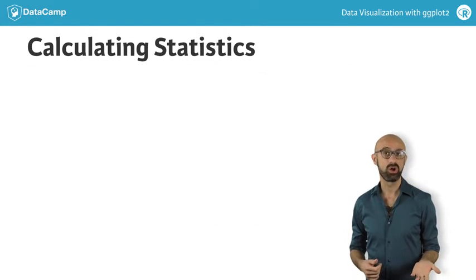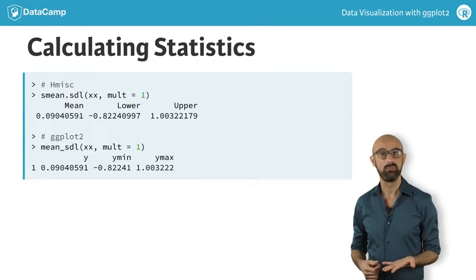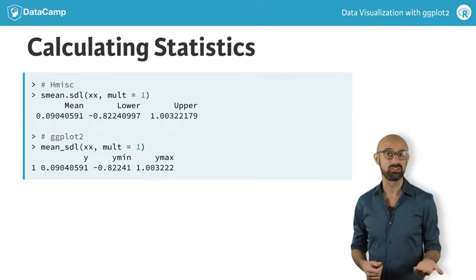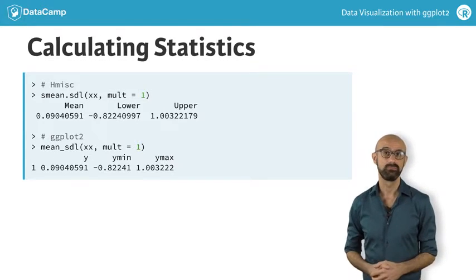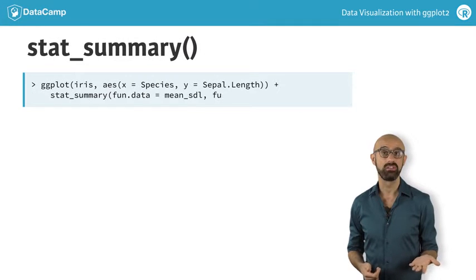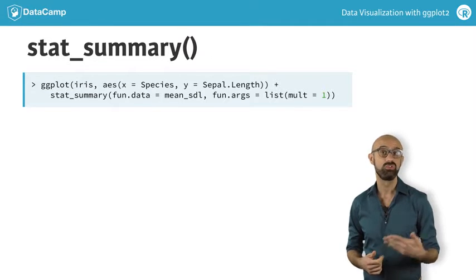To use this information in ggplot, there is a special function which simply converts this vector to a data frame and renames the variables to match the aesthetic naming convention of ggplot. The ggplot function is called mean_sdl. To use this, we'll call it as the fun.data argument within the stat_summary function, which will automatically feed the results and a geom to our plot.